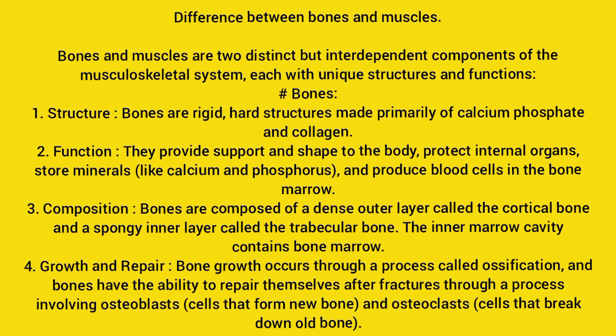Composition: bones are composed of a dense outer layer called the cortical bone and a spongy inner layer called the trabecular bone; the inner marrow cavity contains bone marrow. Growth and repair: bone growth occurs through a process called ossification, and bones can repair themselves after fractures through a process involving osteoblast cells that form new bone and osteoclast cells that break down old bone.